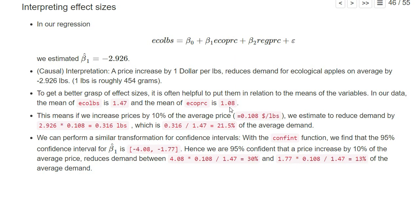We can calculate, for example, that if we increase the price by 10 percent of this average price—so basically roughly 11 cents per pound—we estimate to reduce the demand by 0.316 pounds, which is 21.5 percent of average demand.